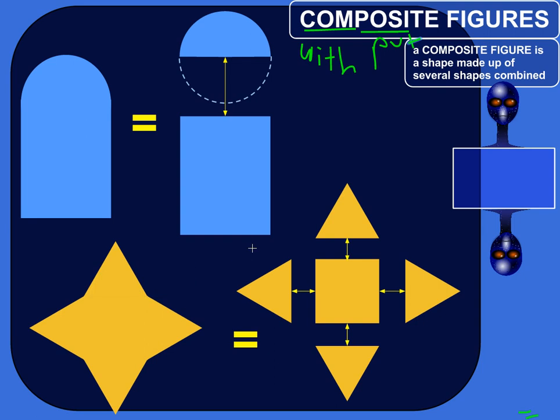And when we talk about composite figures, usually we're talking about something that looks, maybe what we would call more complex, made up of simpler shapes.